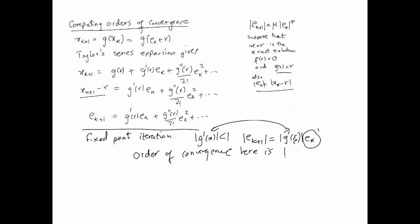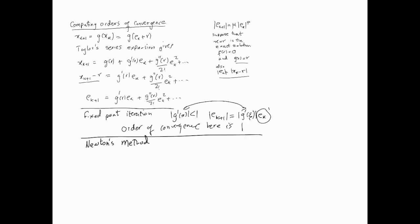Therefore, the order of convergence here is 1. The order of convergence of fixed point iteration is 1. It's linear, its order of convergence is linear. Okay, let's move on to the next one.